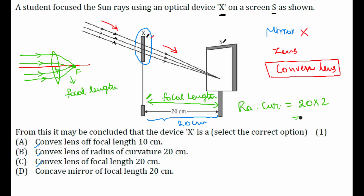The radius of curvature equals twice the focal length: 2 × 20 = 40 cm. Checking the options: option A (focal length 10 cm) is wrong; option B (radius of curvature 20 cm) is wrong; option C — convex lens of focal length 20 cm — is the correct answer.